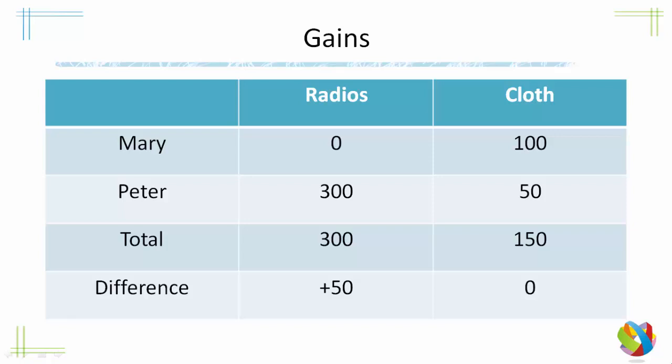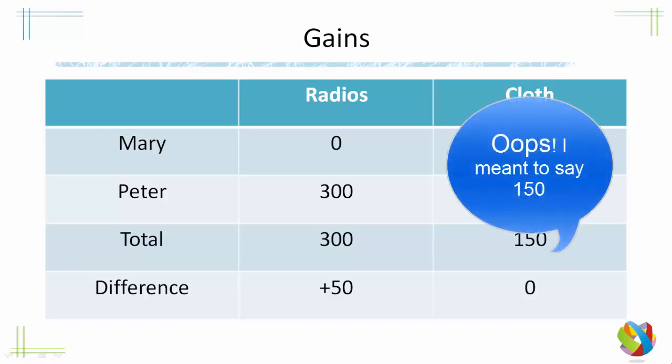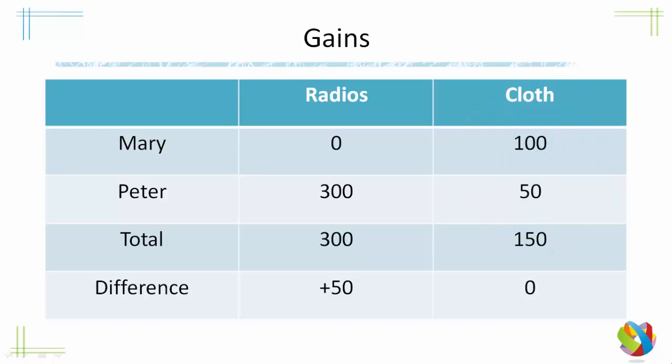Let's imagine Peter says: we still need 150 pieces of cloth, so I will make 50 pieces of cloth. In doing that, he has to sacrifice radio production, and remember that each piece of cloth costs him 2 radios. So the 50 cloths would cost him 100 radios. Instead of 400 radio production, he is now producing 300. In the end we have a total of 300 radios produced and 150 cloths, meaning a net gain of 50 radios for Peter and Mary.